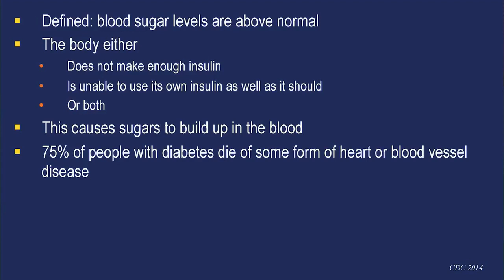The next risk factor is diabetes. The food we eat is turned into glucose for our bodies to use as energy. The pancreas makes a hormone called insulin to help glucose get into the cells. Diabetes occurs when blood glucose levels are above normal — either because the body cannot make enough insulin, cannot use its own insulin effectively, or a combination of both, causing sugars to build up in the bloodstream. Seventy-five percent of people with diabetes die of some form of heart disease or blood vessel disease.